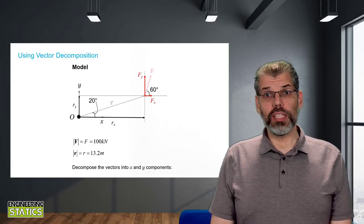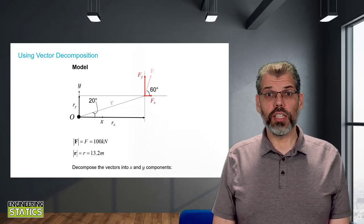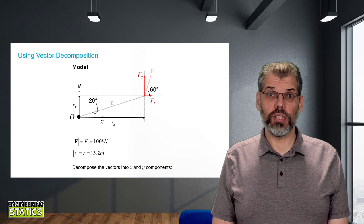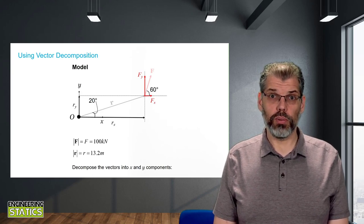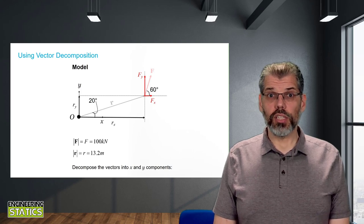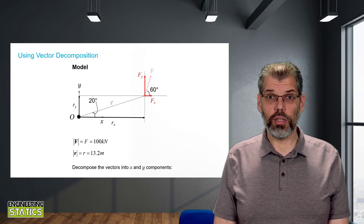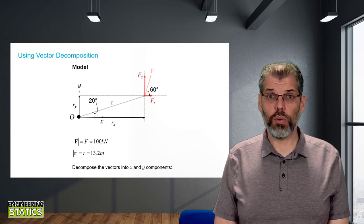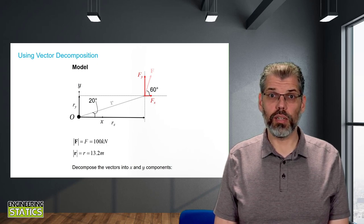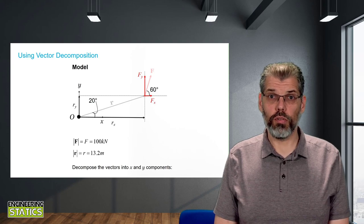The reason we decompose the vectors into components is that all of our decomposed distances are either parallel or perpendicular to our decomposed force components. This allows us to determine the moment by scalar multiplication, as the moment of a force about a given point is simply the force multiplied by the perpendicular distance from that point to the force.